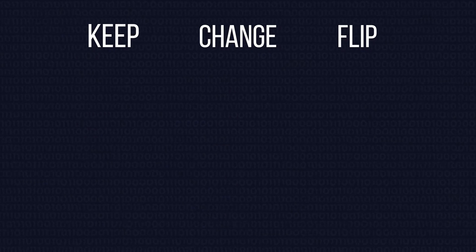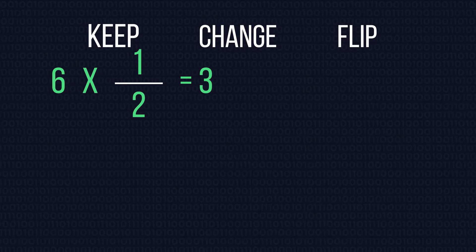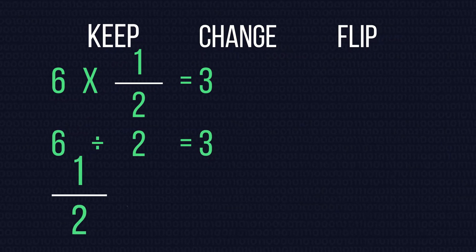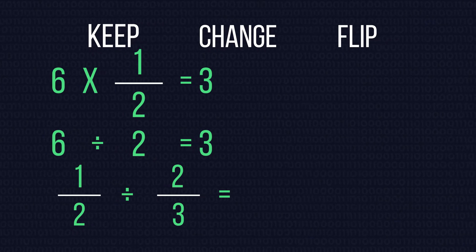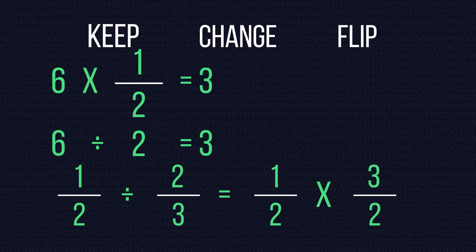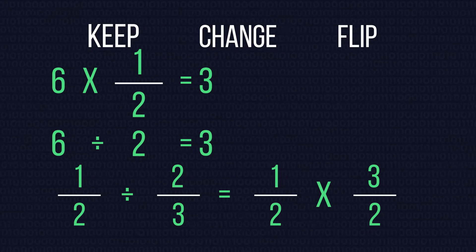Now for dividing. To divide a fraction by another fraction, we use a method called KeepChangeFlip. This method is based on the knowledge that multiplying by 1 half is exactly the same as dividing by 2. As such, dividing by 2 thirds is the same as multiplying by 3 over 2. This is because they are reciprocals, or numbers that have a product of 1.